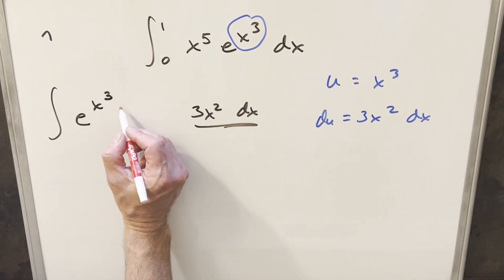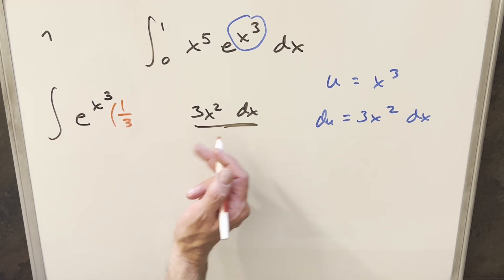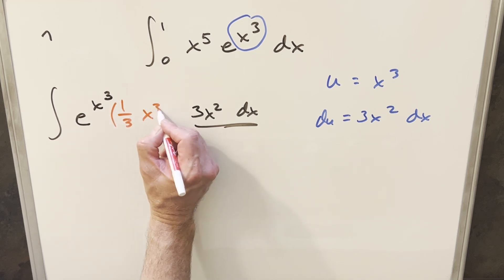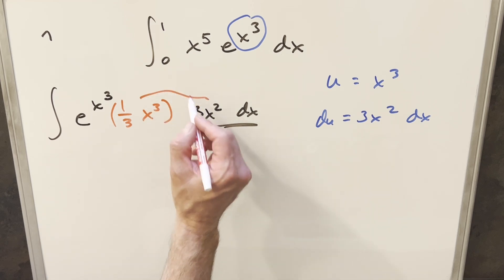But in order so I don't change it, one thing I can do is if I multiply in one-third here, one-third times 3 is just 1. And if I multiply in with the x cubed, now you multiply this all out. This all together is just going to get back to our x to the fifth, so I haven't changed it.